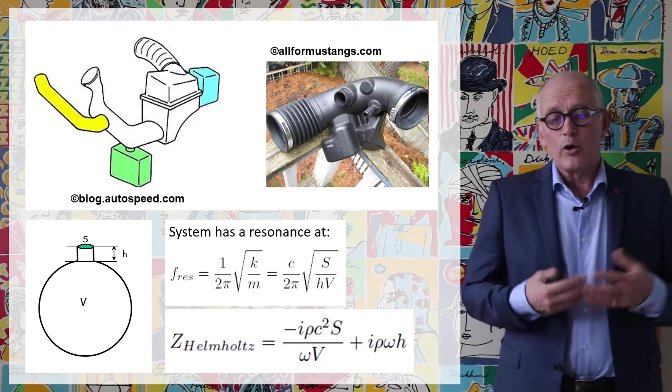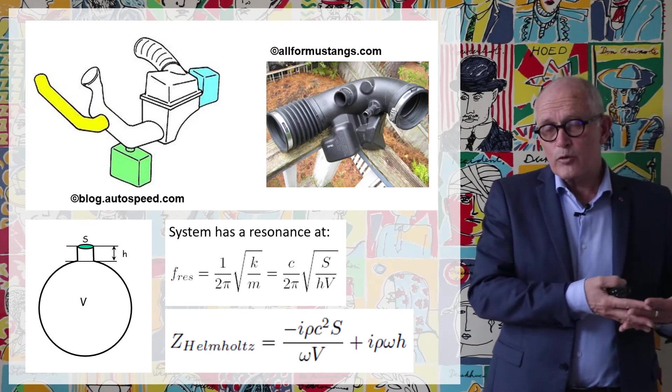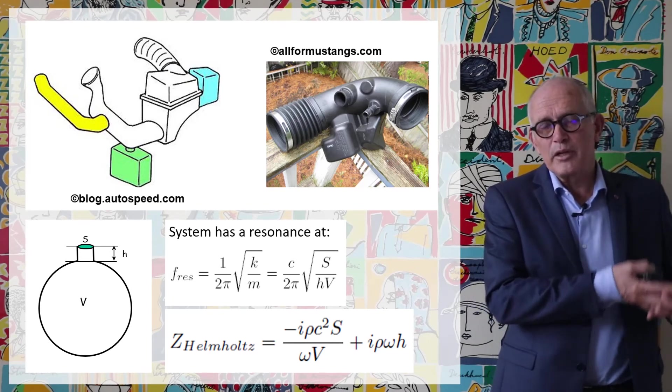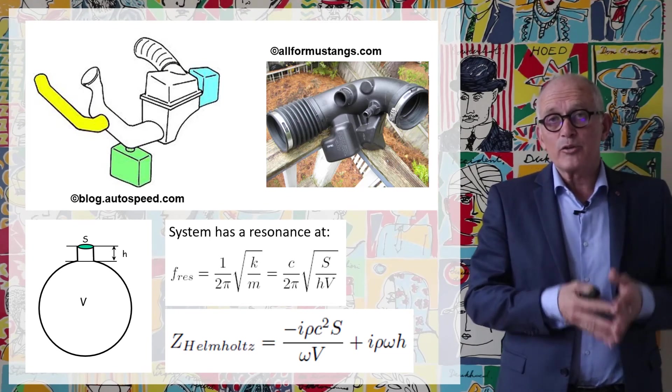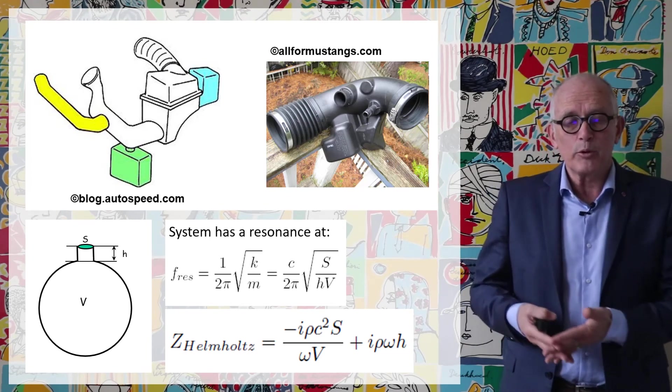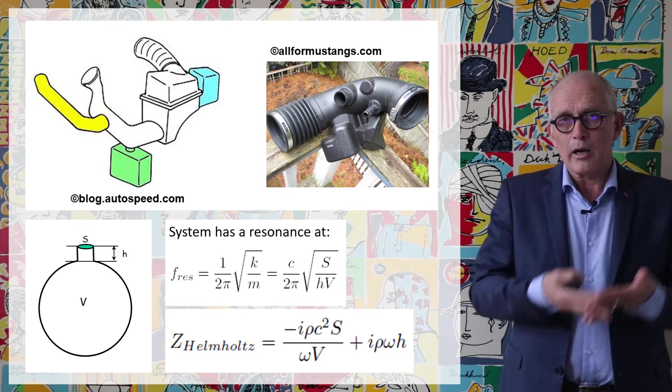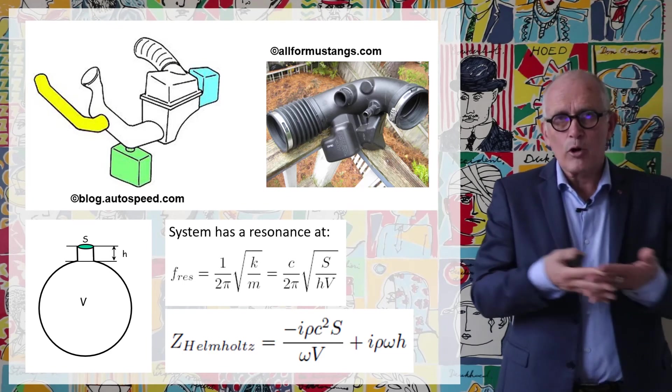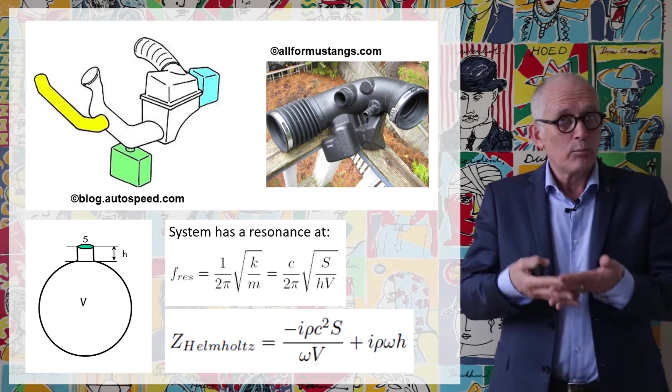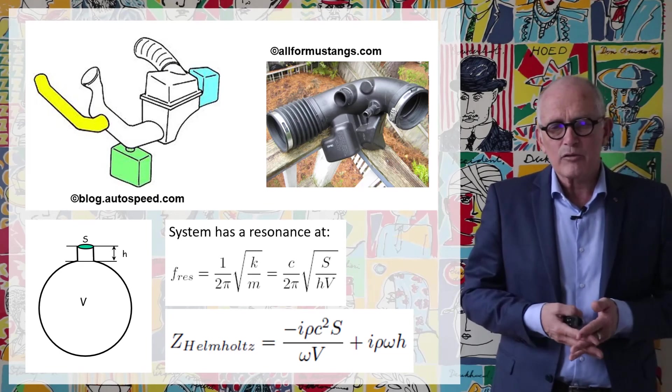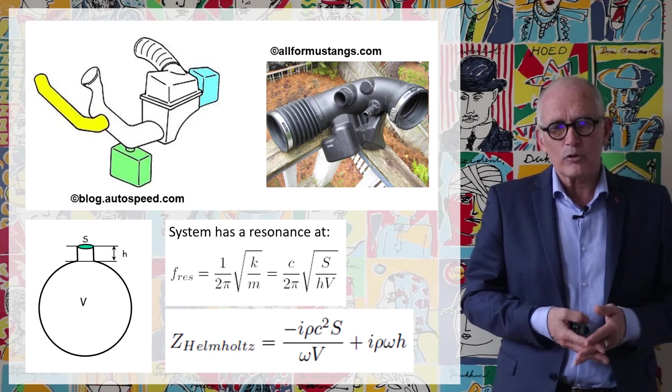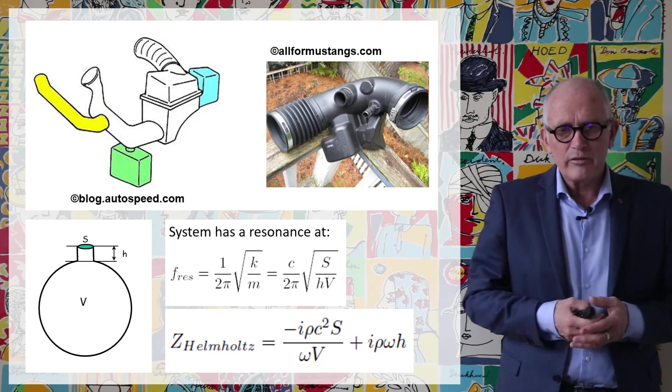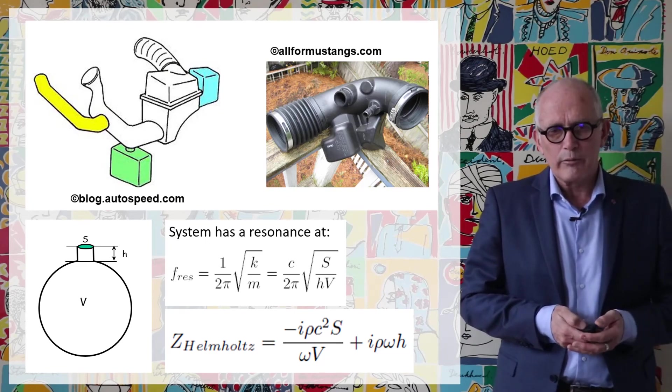So once again using the transfer matrix, the general transfer matrix we have obtained for a derivation in that derivation we can place different types of components and two examples are a quarter wavelength resonator or a Helmholtz resonator but once again thanks to the transfer matrix method you can easily calculate the effect of such components on the efficiency of the total filter.